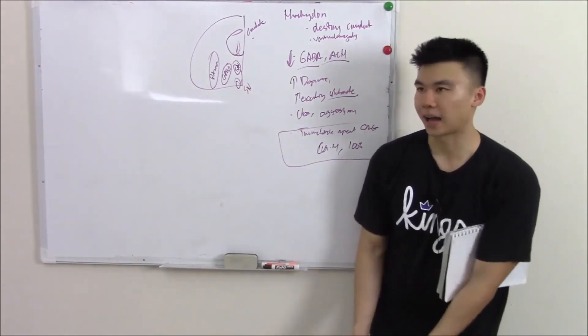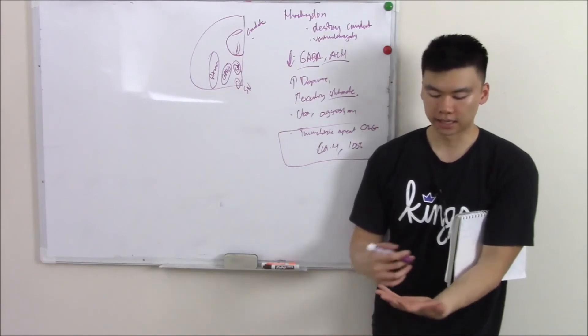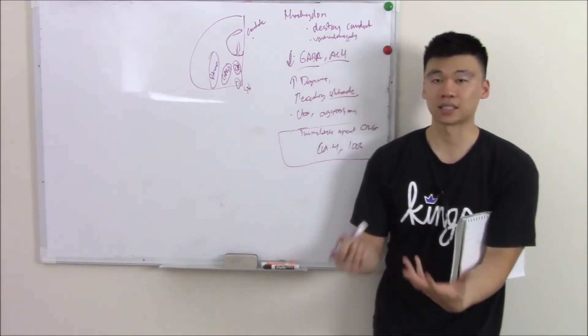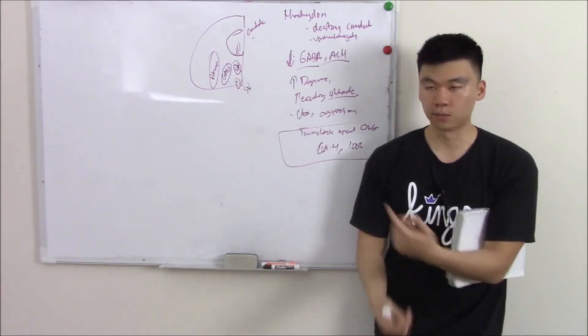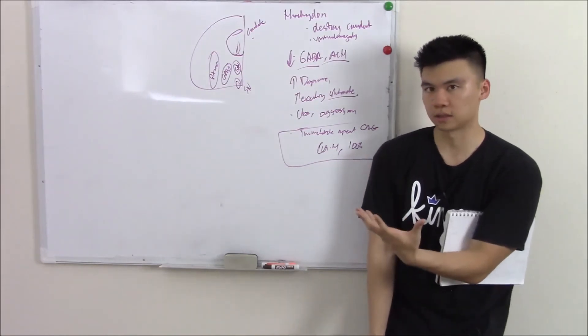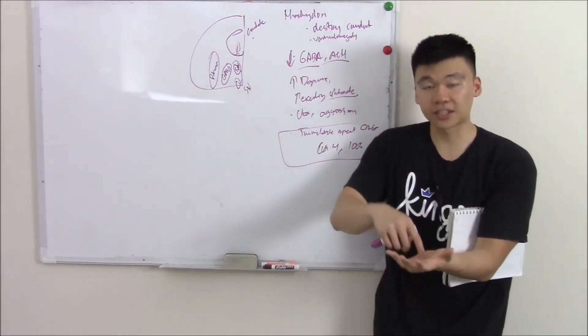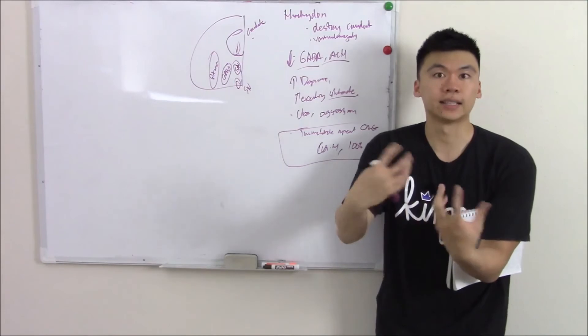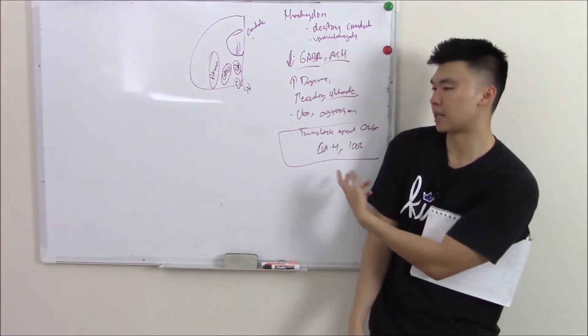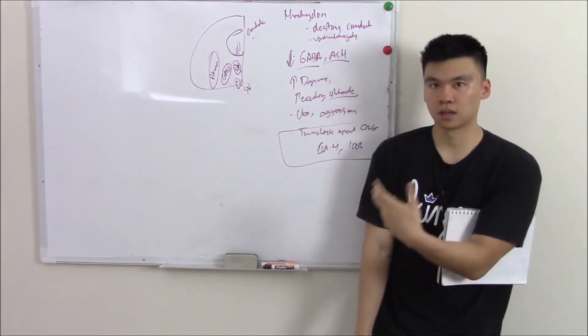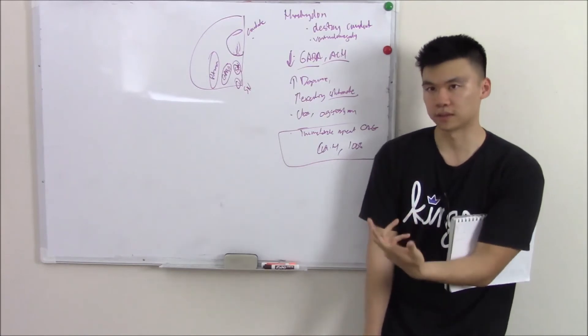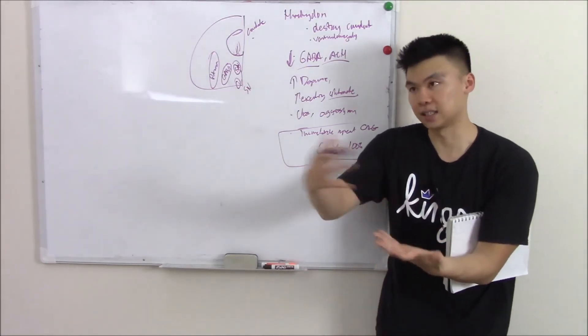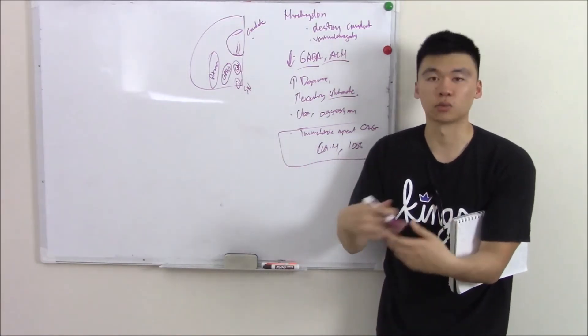And also, any trinucleotide repeat has something called anticipation. If you have a child, they're going to have more CAG repeats, and they're going to have a more severe disease that presents sooner. And if that child has a child, then they can anticipate that that grandkid would have more repeats, more severe disease, have it sooner. And if that kid has a kid, then again, the cycle goes on and on. And we call that anticipation.